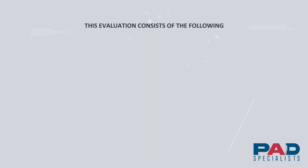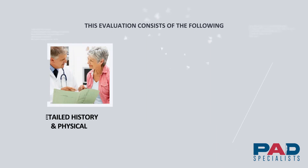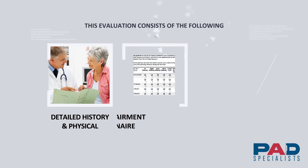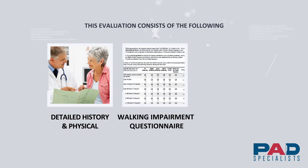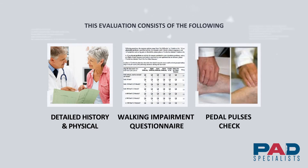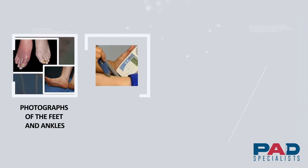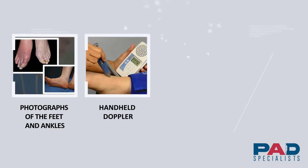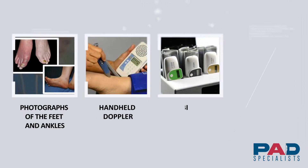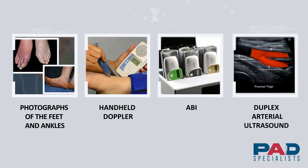This evaluation consists of the following: detailed history and physical, walking impairment questionnaire, pedal pulses check, photographs of the feet and ankles, handheld Doppler, ABI, and duplex arterial ultrasound.